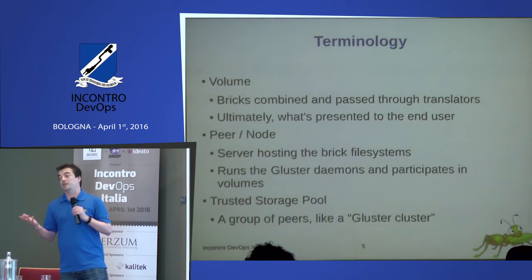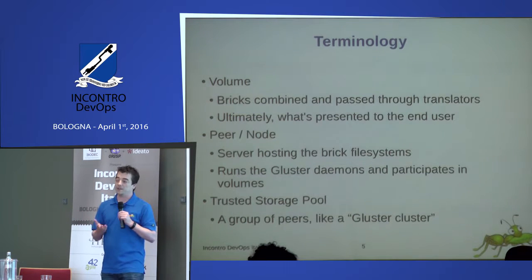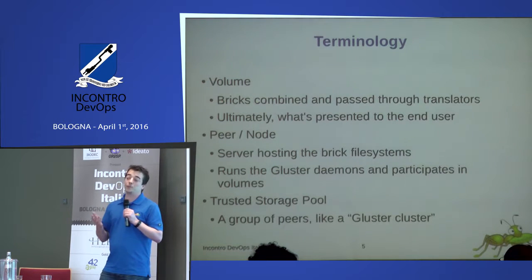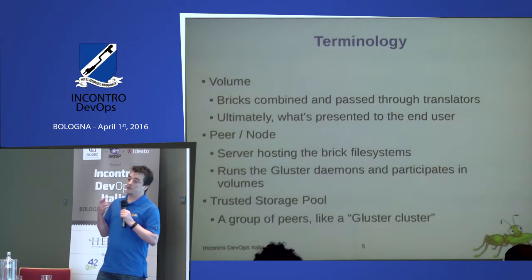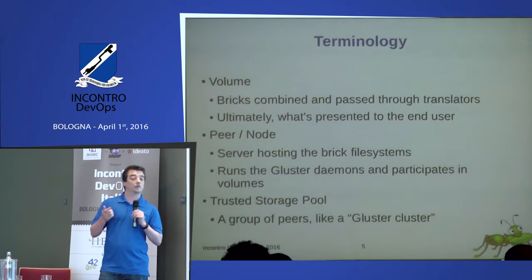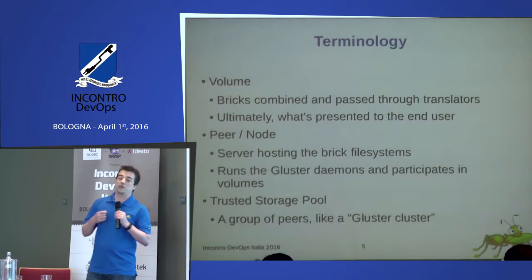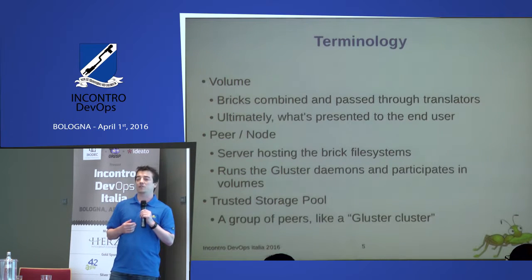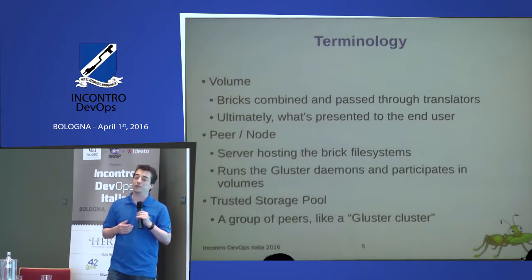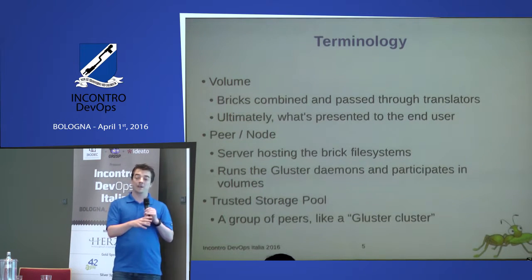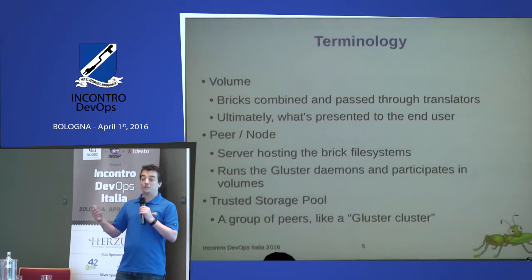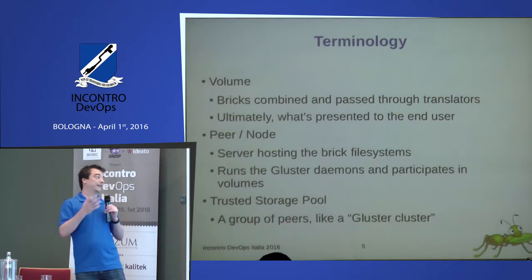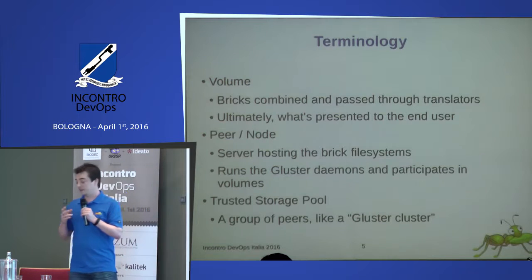In Gluster it's a cluster environment, but we don't call it a Gluster cluster — that sounds really awkward. We prefer to call it a trusted storage pool. A trusted storage pool consists of many servers, which we call nodes or peers. We don't like calling them servers because if a user says their server doesn't work, we don't know if it's a client system or a storage node. So we prefer terms like peers and client devices.